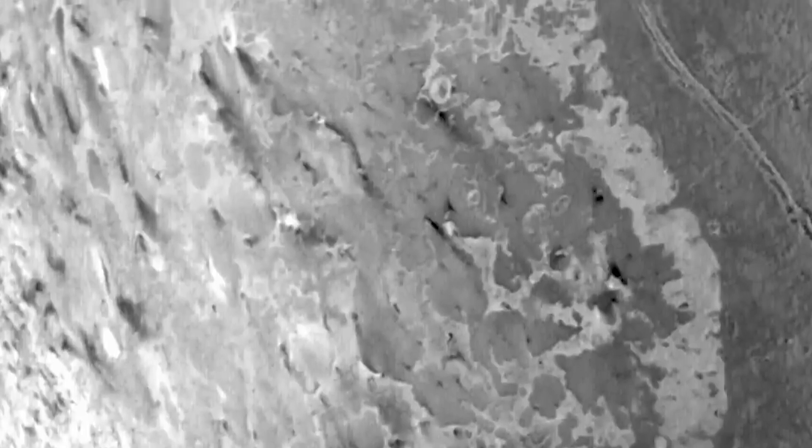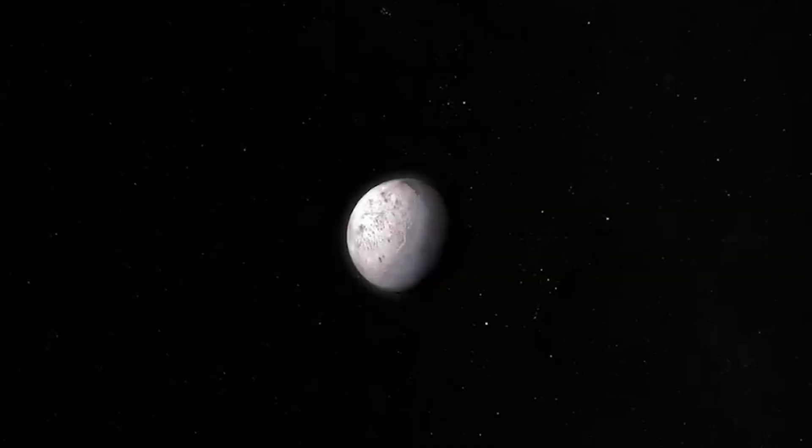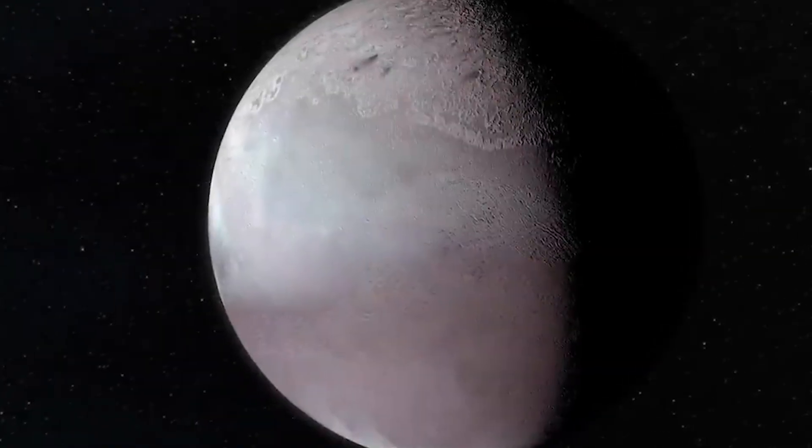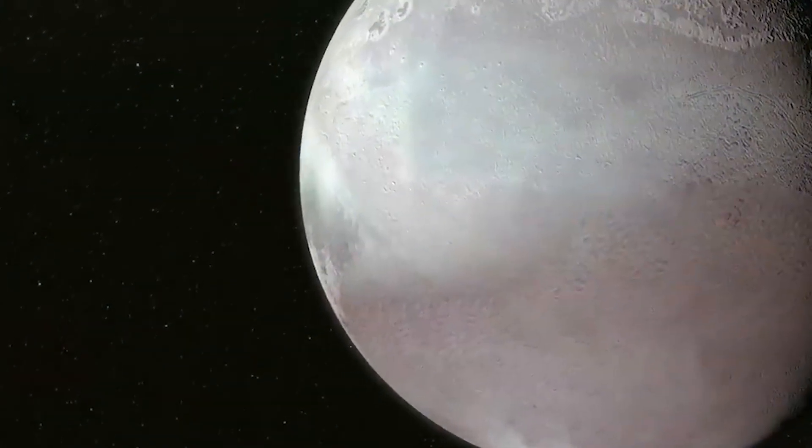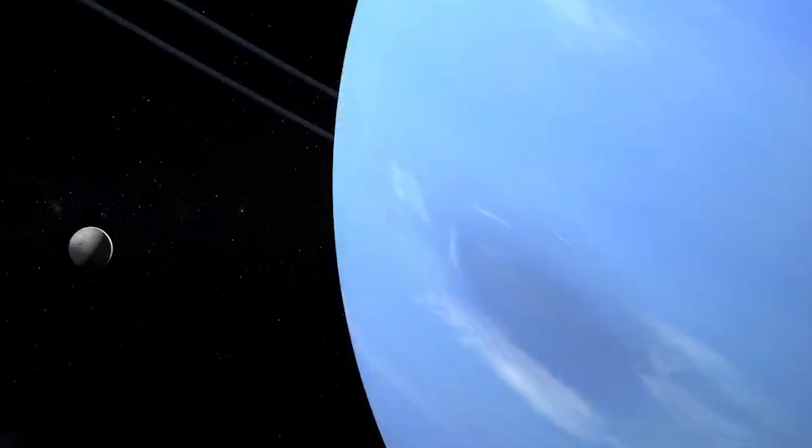What makes Triton even more remarkable is its icy surface, which is covered in frozen nitrogen. This reflective coating bounces back about 70% of the sunlight that strikes it, making Triton shine brightly in the darkness of space. Despite being so far from the sun, where temperatures plummet to incredibly low levels, Triton is geologically active.